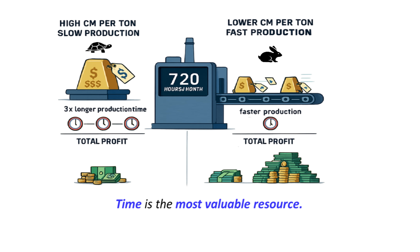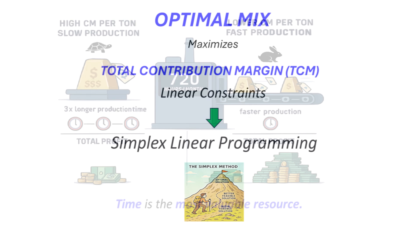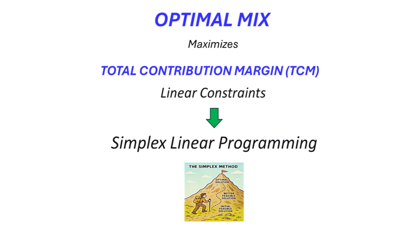So how do you find that optimal mix mathematically? It's a classic operational research problem. You're trying to maximize a linear objective function — that's our total contribution margin, the TCM — subject to a whole series of linear constraints: things like machine capacity, or minimum orders you promised a customer, production limits, sales limits. And the tool used to solve this is simplex linear programming.